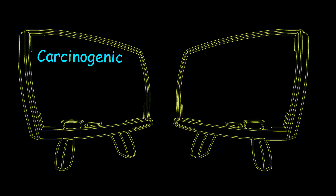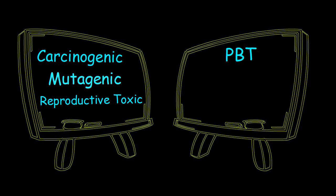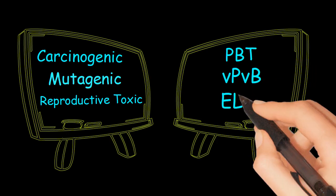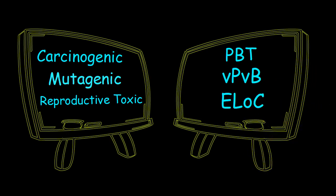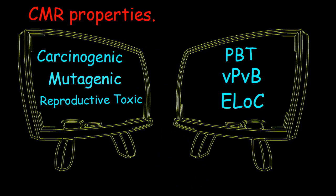The six categories are: carcinogenic, mutagenic, reproductive toxic, PBT, VPVB, and ELOC. Carcinogenic, mutagenic, and reproductive toxic are collectively called CMR properties. In this video we will discuss CMR properties; PBT, VPVB, and ELOC will be discussed in a separate video.